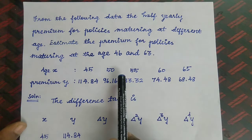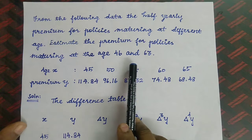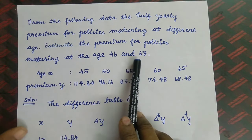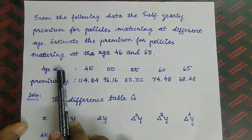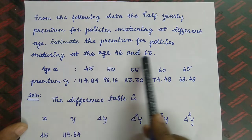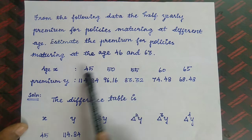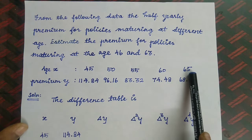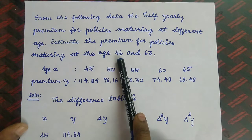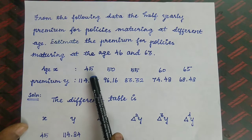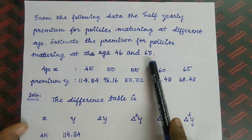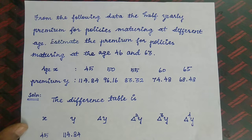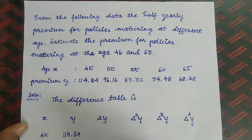In this problem, we are supposed to use two formulas — forward as well as backward — because the question asks to find the premium for policies maturing at age 46 and 63. Age 46 is near the beginning of the tabulated values, and 63 is near the end. For beginning values we use forward interpolation, and for end values we use backward interpolation.